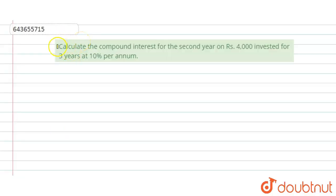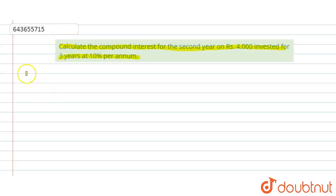Hi, welcome to this video. The question is: calculate the compound interest for the second year on rupees 4000 invested for three years at 10 percent per annum. In this question, we will divide this into two parts.